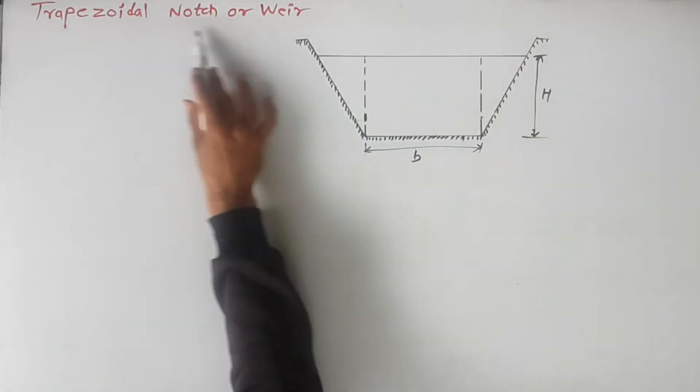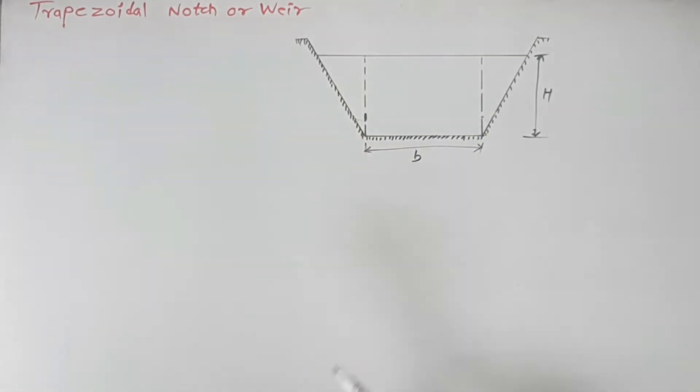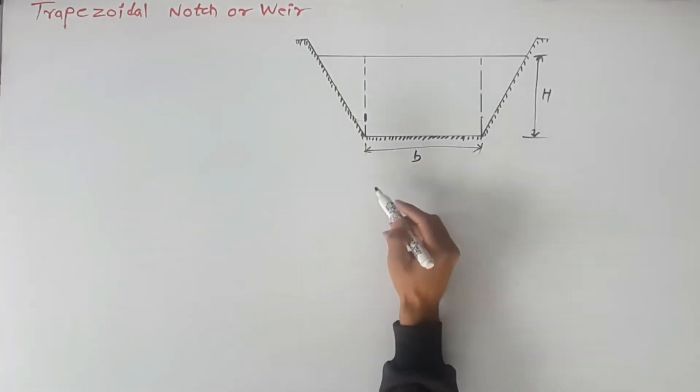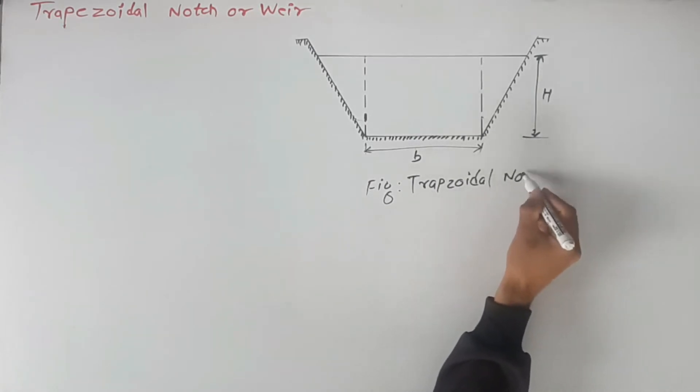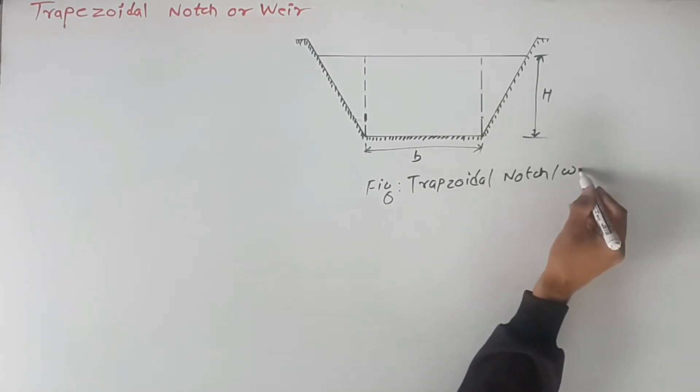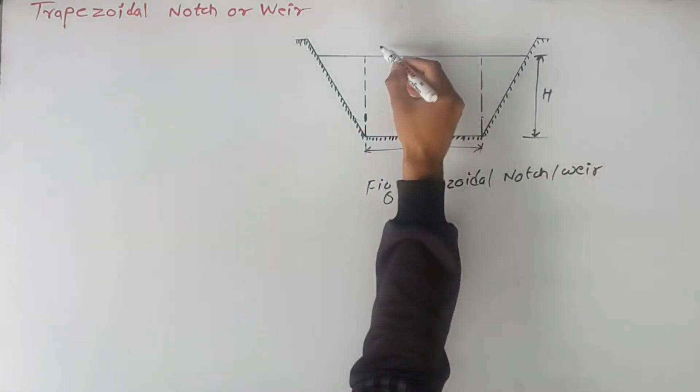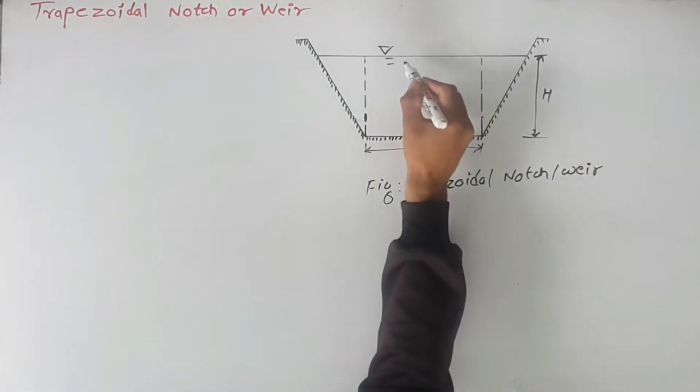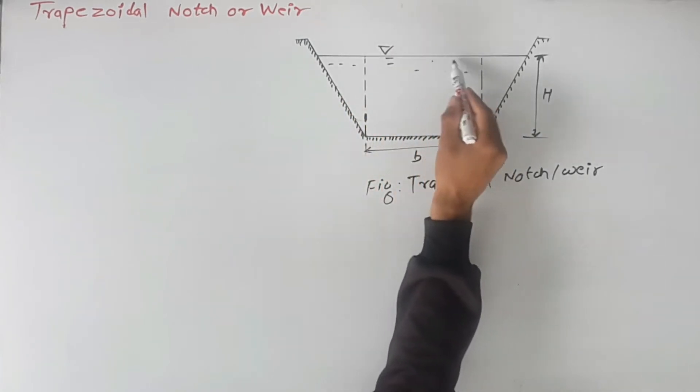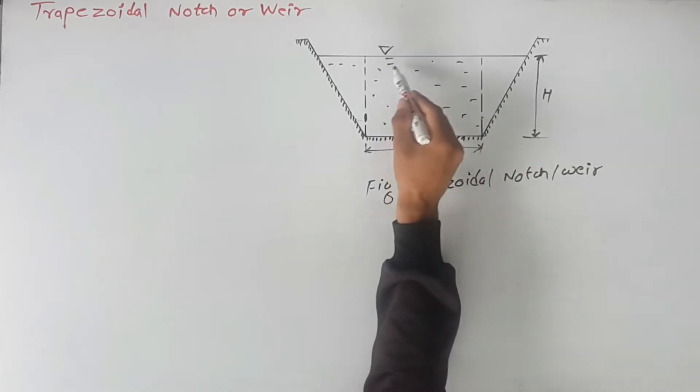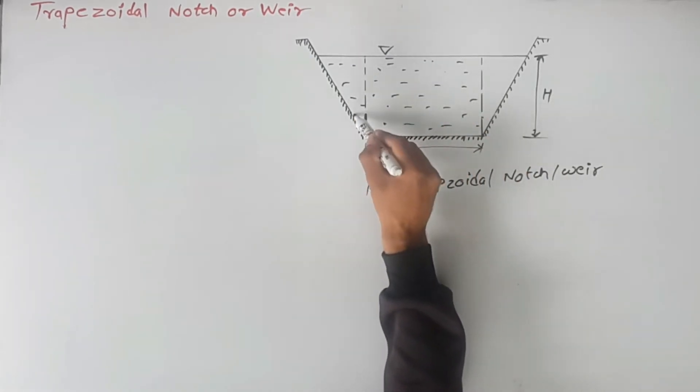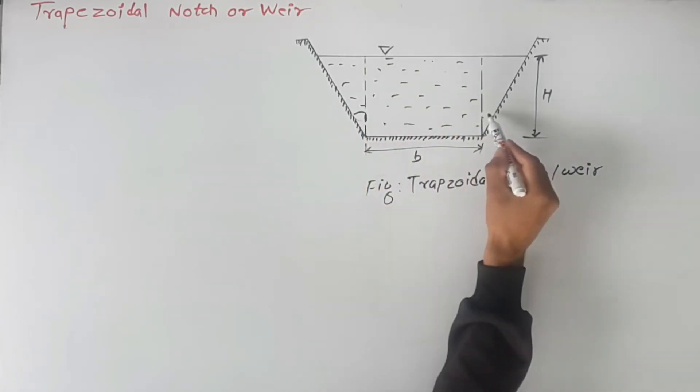Let's start our video tutorial on trapezoidal notch or weir. In the figure here, you can see the trapezoidal weir. This is the free surface, here is water or liquid flowing over the notch, and this is the angle made by this vertical line with the notch.